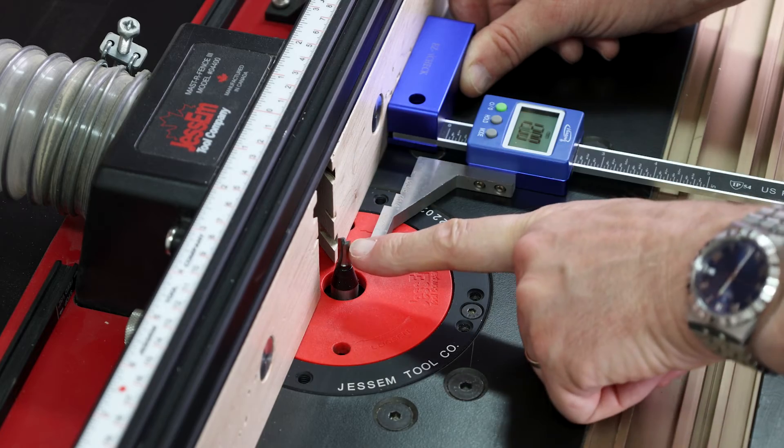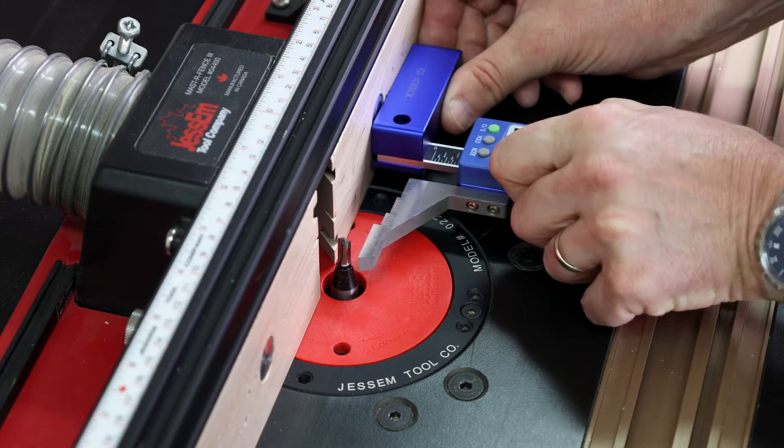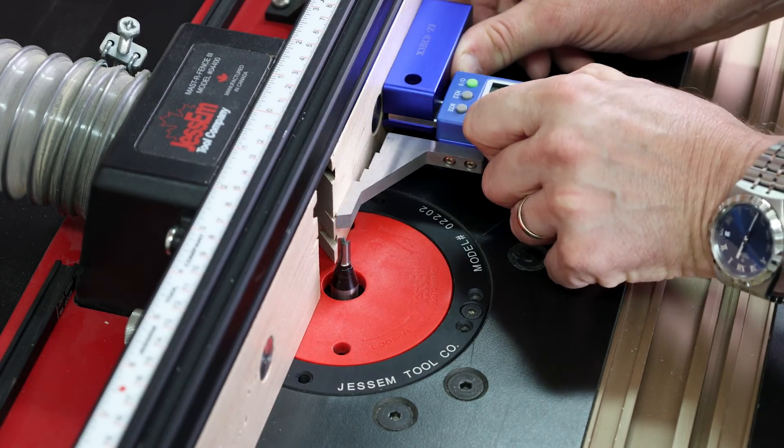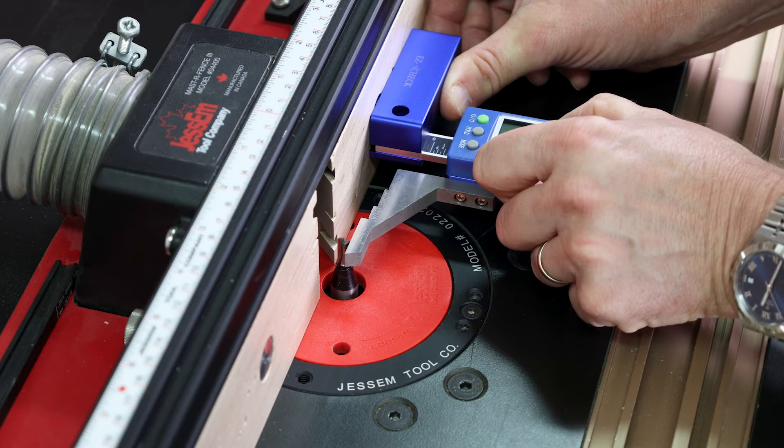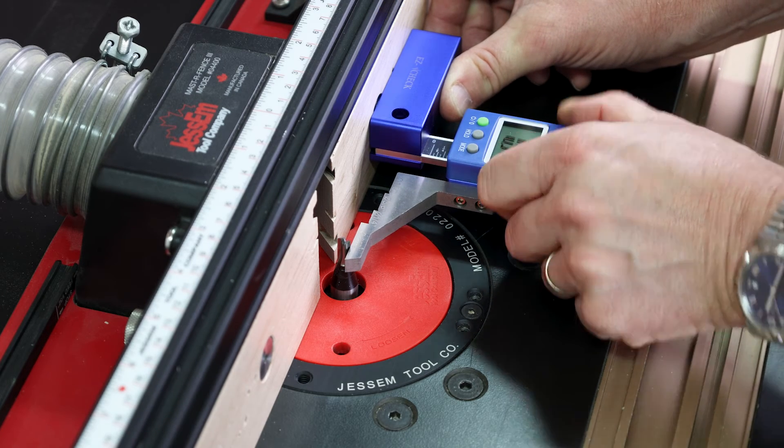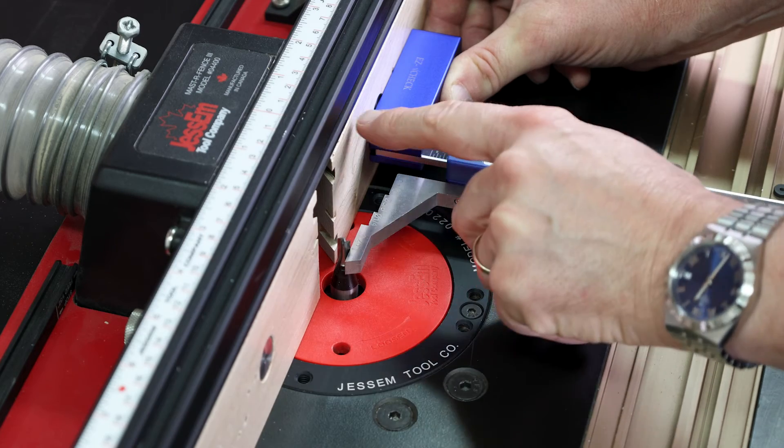Measuring from a fence to an outside of a cutter is fairly straightforward. Again, we can just make sure it's at a zero point, put it onto the tip of the cutter and we have an external dimension from the cutter to the fence.